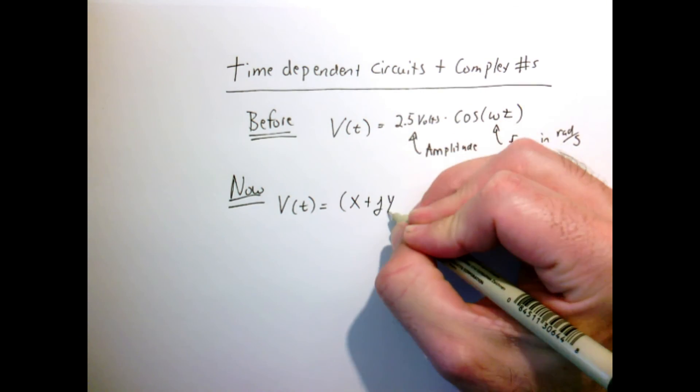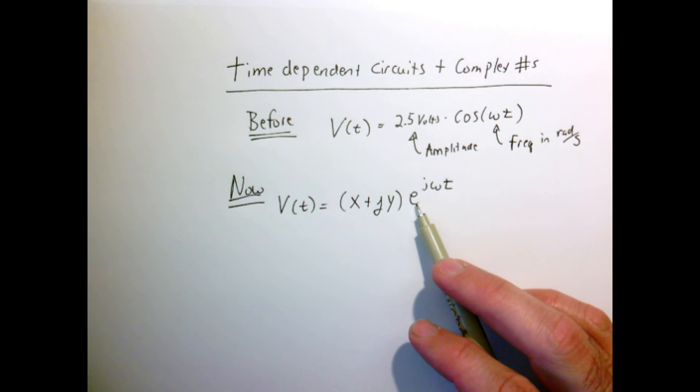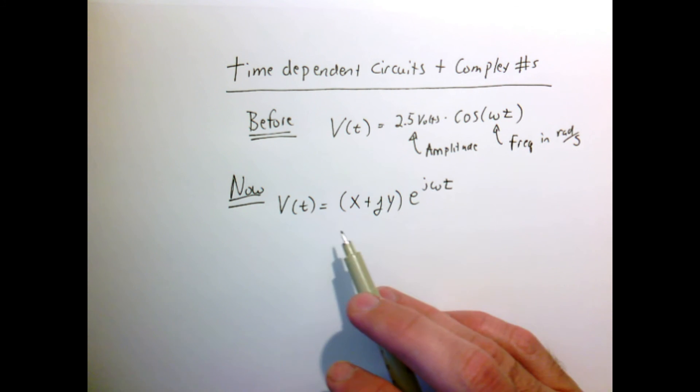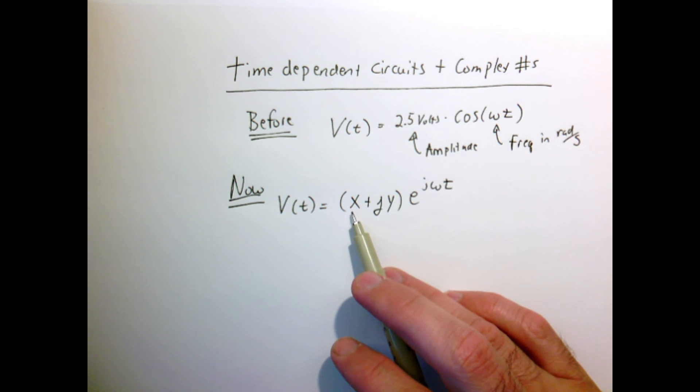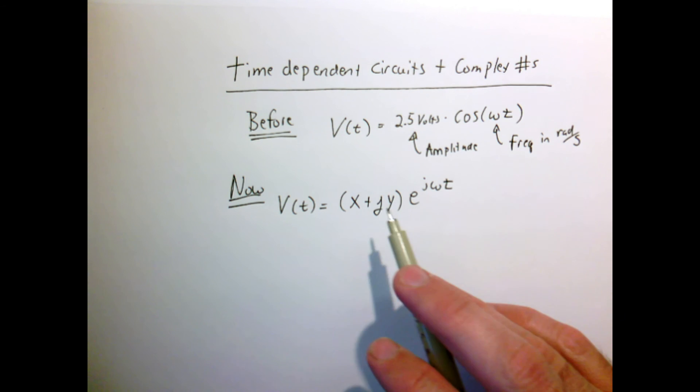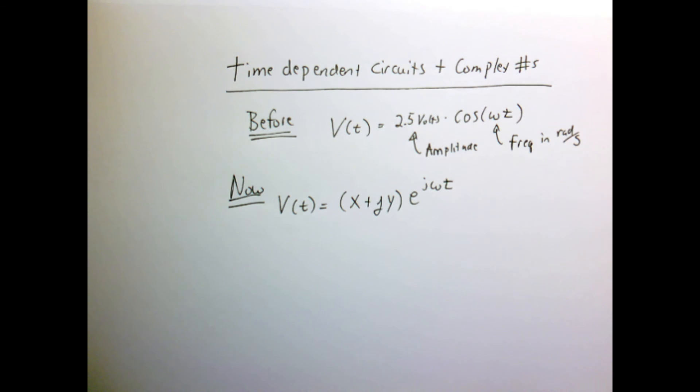Now we're going to use the fact that e to the j omega t is equivalent to sines and cosines and write our voltage in a form where we have some complex amplitude that we'll write as x plus jy times e to the j omega t.